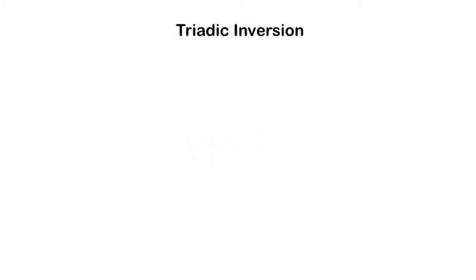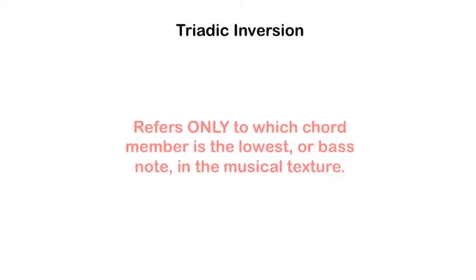Now that we can spell all the triadic qualities, let's move on to the final characteristic: inversion. Triadic inversion is an expression of which chord member — the root, third, or fifth — is the lowest, or bass note, of the voiced structure. This often causes some confusion with the process of musical inversion, which is the transposition of a pitch in a structure by a certain interval, usually an octave, so that it appears above or below the other pitches in the structure. When referring to triadic inversion, remember that it expresses only which chord member is the lowest or bass pitch.